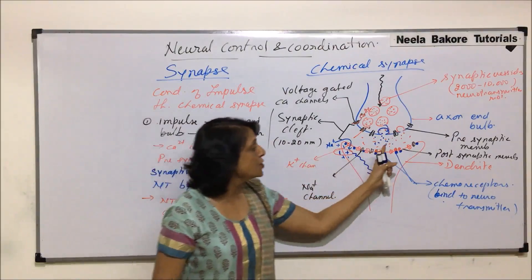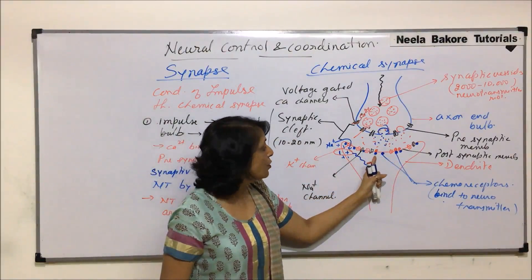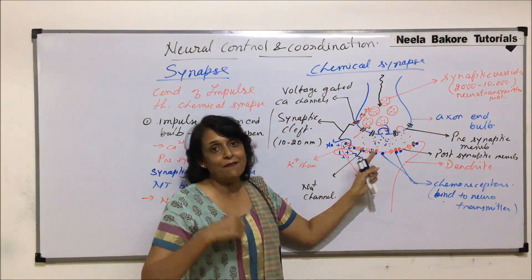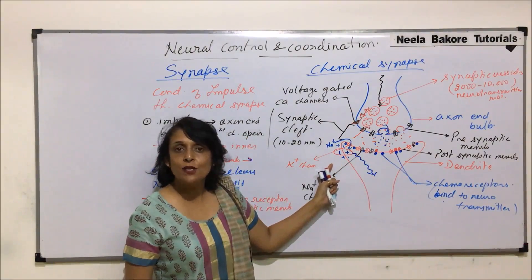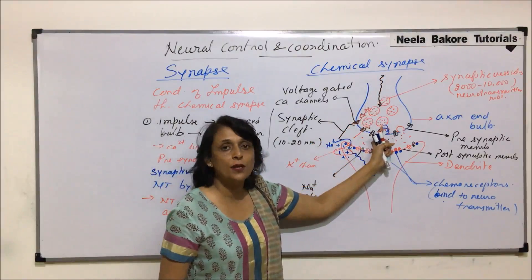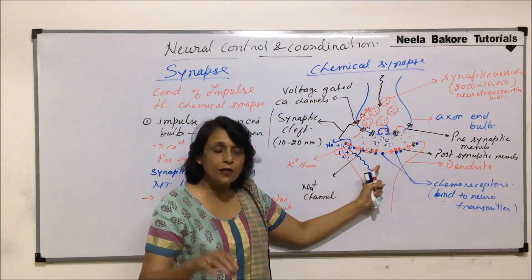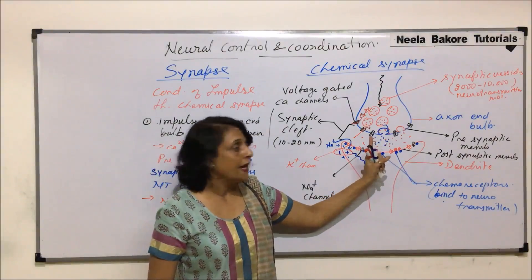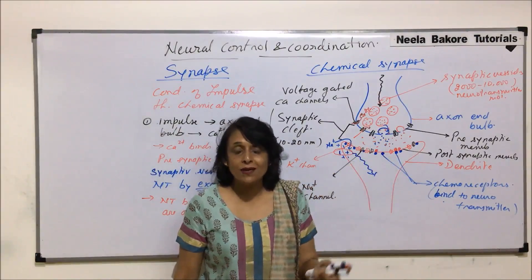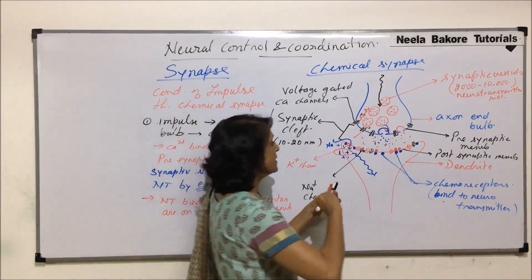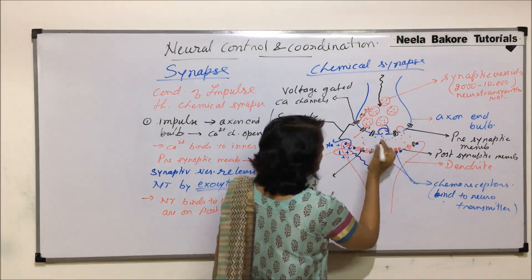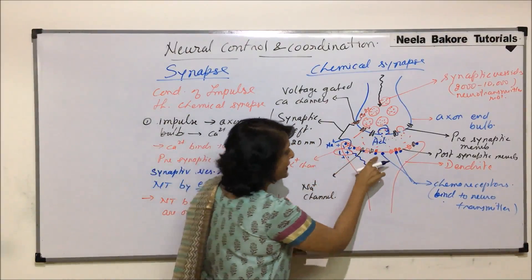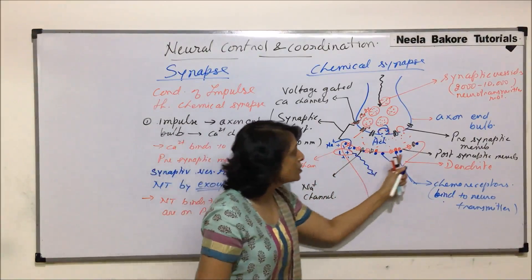The problem now is this neurotransmitter. If the neurotransmitter remains in the cleft, it will keep attaching to the receptor and every time it attaches, one more impulse will be generated. So one impulse comes from the pre-synaptic side, but the neurotransmitter staying in the cleft would keep generating impulse after impulse. It has to be removed — it will be broken down by an enzyme.